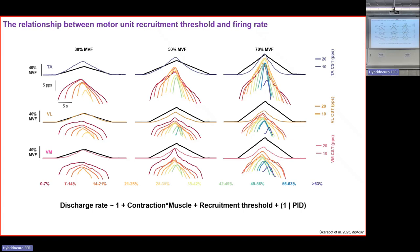Because recruitment threshold predicts discharge rate to some degree, when using statistical models to quantify discharge behavior, we use recruitment threshold as a covariate — typically in a mixed model with discharge rate as the outcome variable and fixed factors of contraction strength and muscle. We also need this because blind source separation algorithms have a bias toward identifying higher threshold units, creating a sampling bias that affects population-level discharge rate estimation.